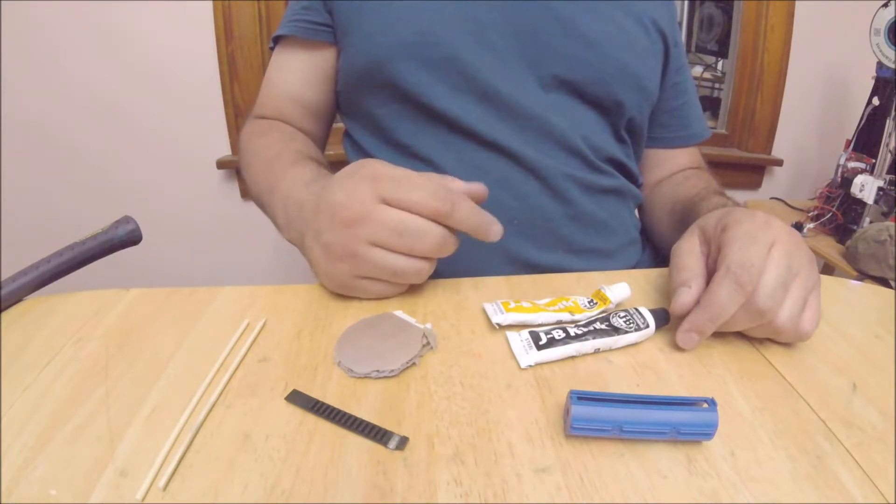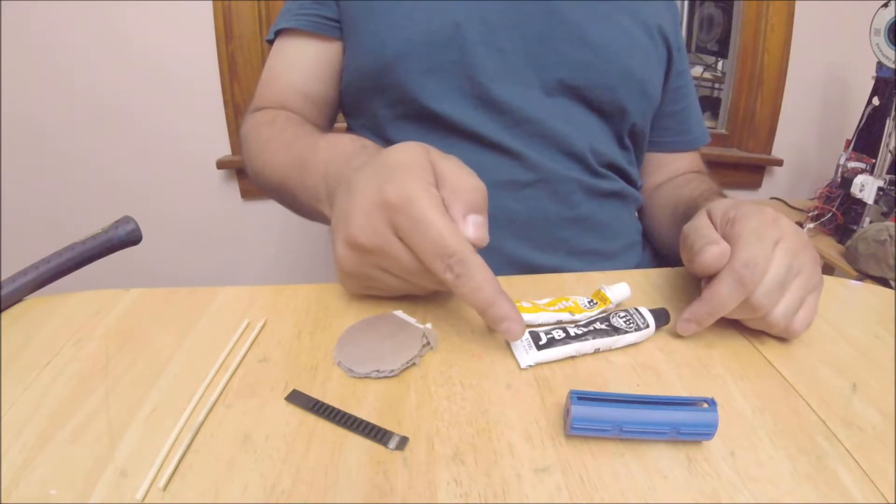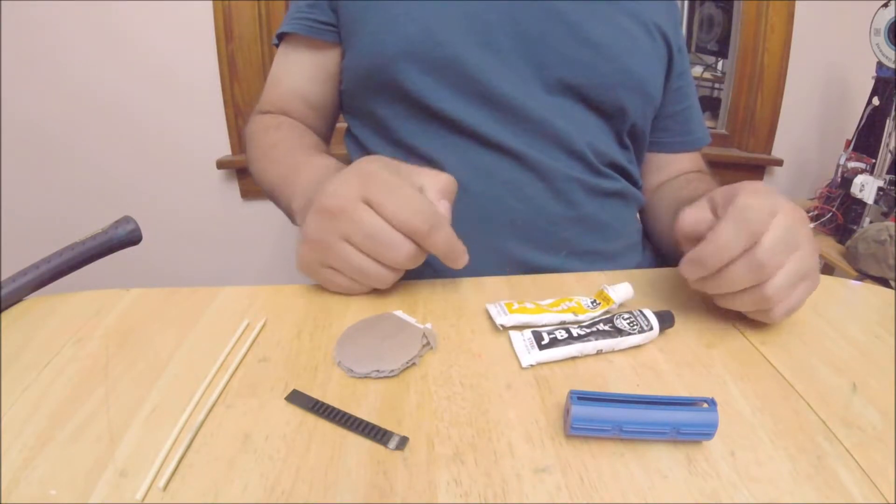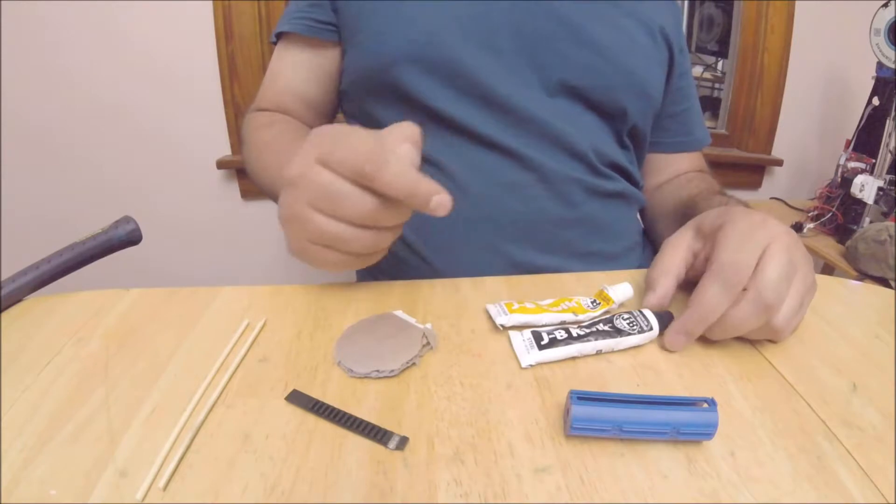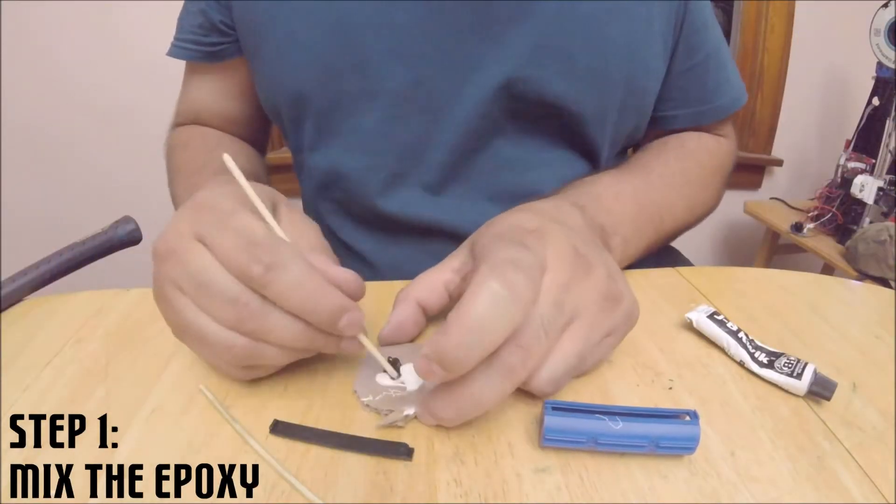For those who haven't used epoxy, there are two parts. You mix equal parts together and have some work time to get the epoxy on to what you are working on. Then you let it cure. So we mix some black with some gray and make sure to combine them thoroughly.